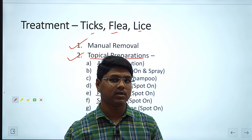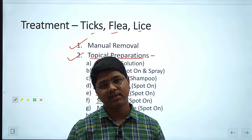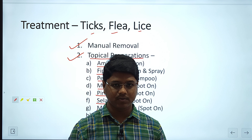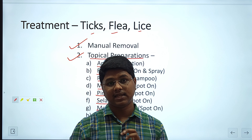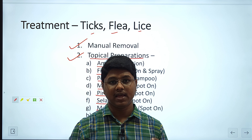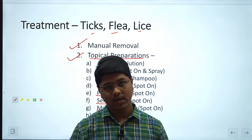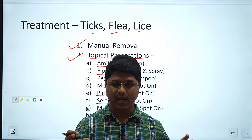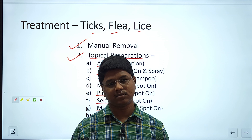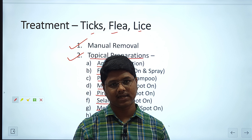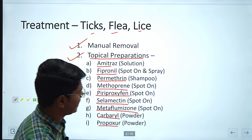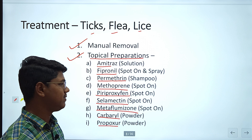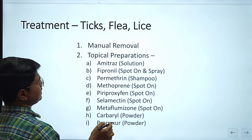You can control tick, flea, and lice, but you cannot completely eradicate them. It is very difficult because they lay eggs not only on the skin of the animal but also in burrows — under the sofa, in different parts of the home. They will then come back and reattach to the body of your dog. So by spot-on formulations or sprays, you can simply control the population, not completely eradicate it.